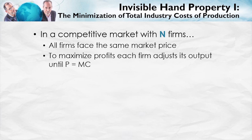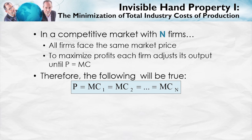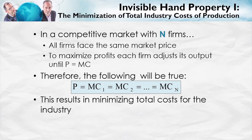Let's summarize invisible hand property number one. In a competitive market with N firms, all firms face the same market price. And to maximize profits, each firm adjusts its output until price is equal to that firm's marginal cost. Therefore, price equals the marginal cost of firm one, which equals the marginal cost of firm two, which equals the marginal cost of firm N. Since these marginal costs are all the same, the total industry costs of production are minimized. A remarkable result, and one due to the invisible hand.